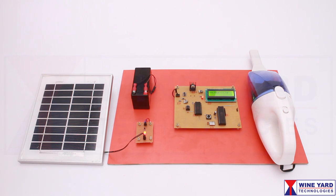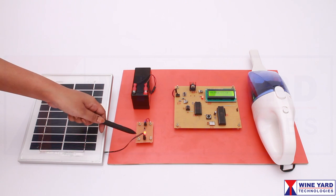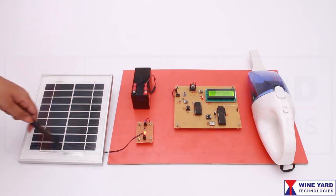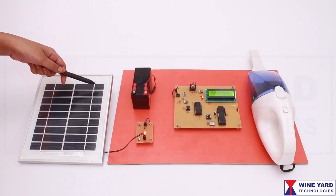This is a photovoltaic solar panel which converts the light energy into electrical energy. This LED indicates the availability of solar energy. Here this battery is charged by the solar panel.